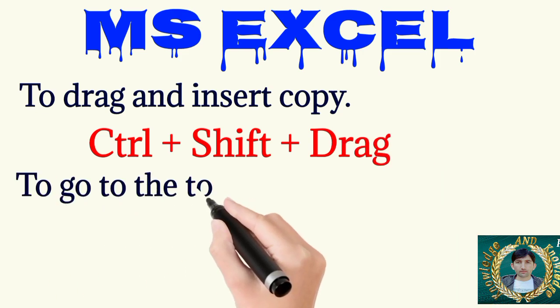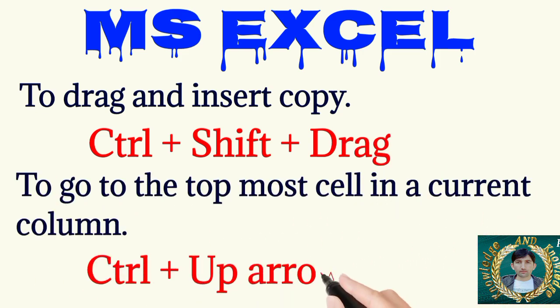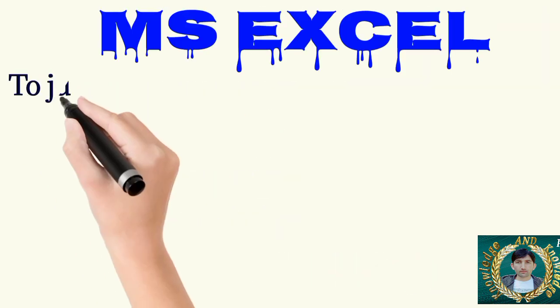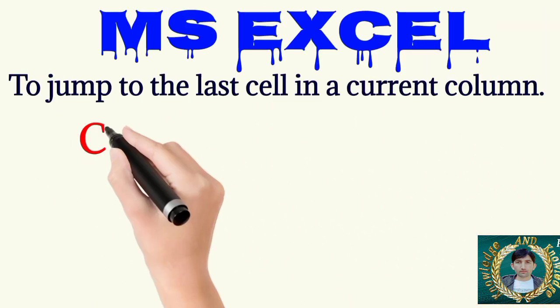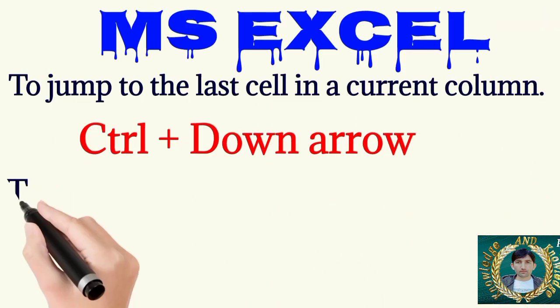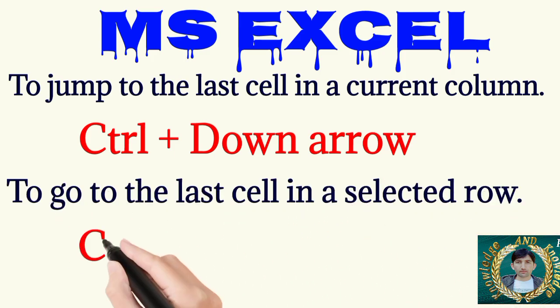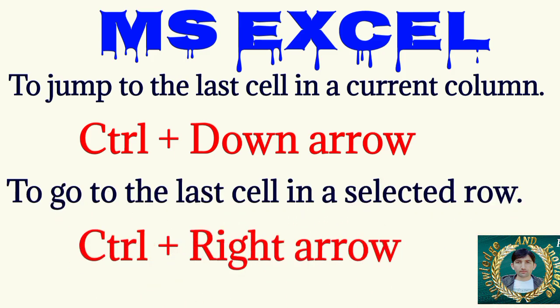To go to the topmost cell in a current column, Ctrl plus Up Arrow. To jump to the last cell in a current column, Ctrl plus Down Arrow. To go to the last cell in a selected row, Ctrl plus Right Arrow.